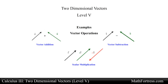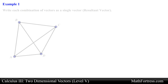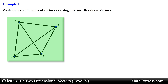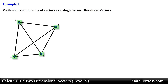Alright let's go over the first example. Write each combination of vectors as a single vector. Here we have line segments connected by various vertices. Since these are line segments we are free to assign the direction of vectors by appropriately denoting the initial and terminal points.